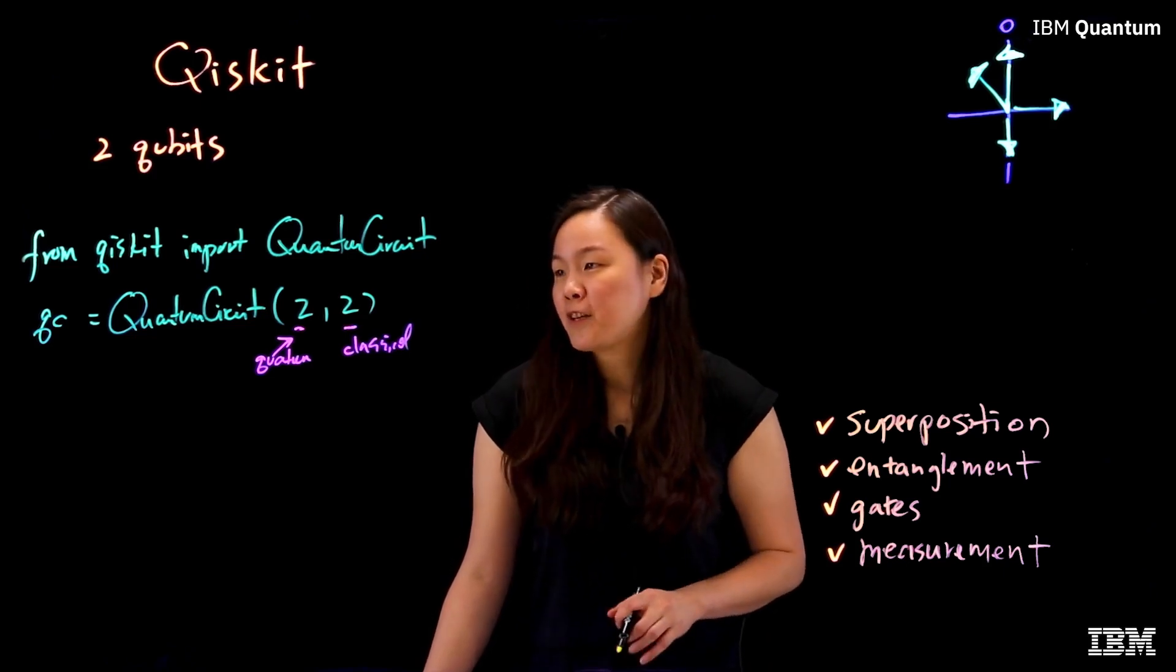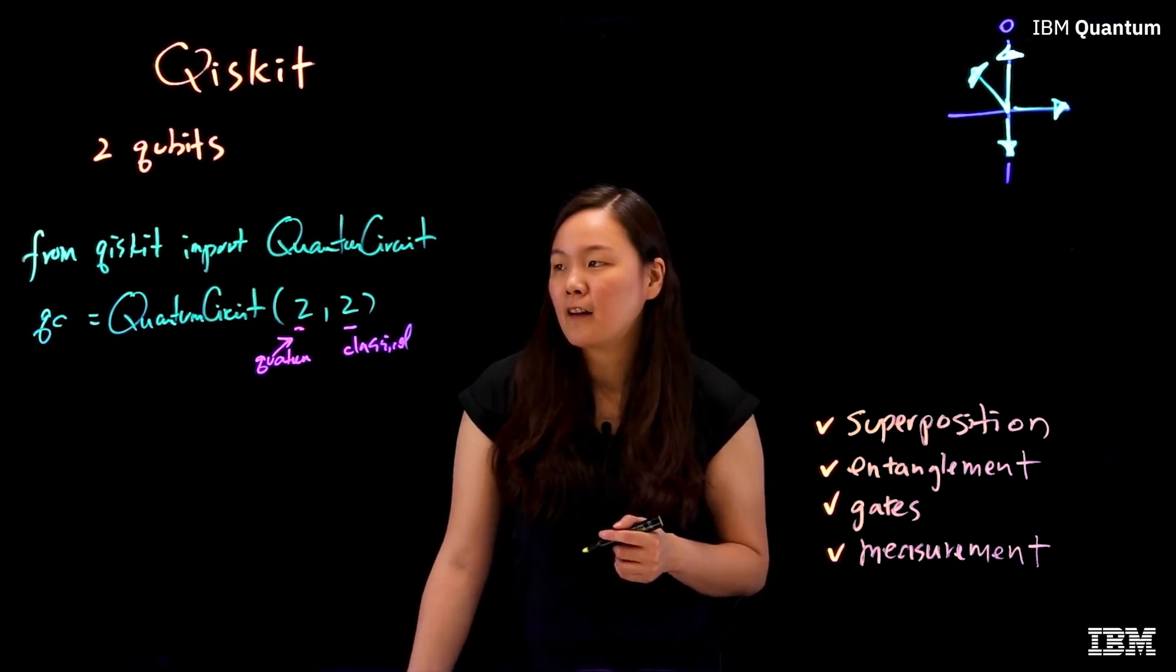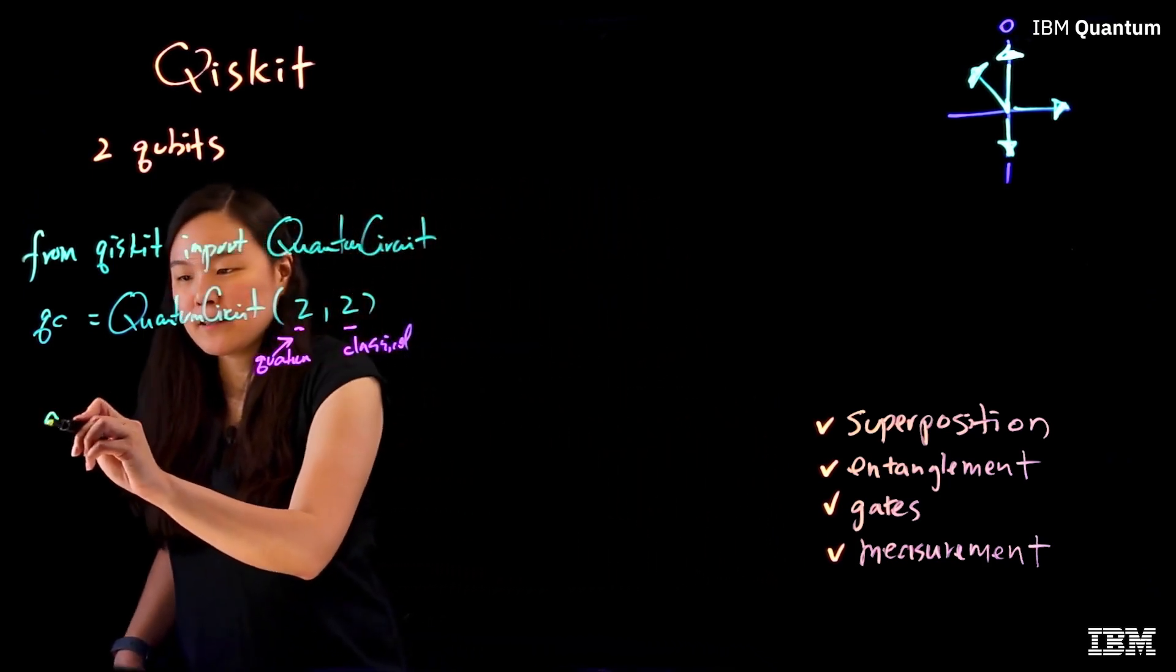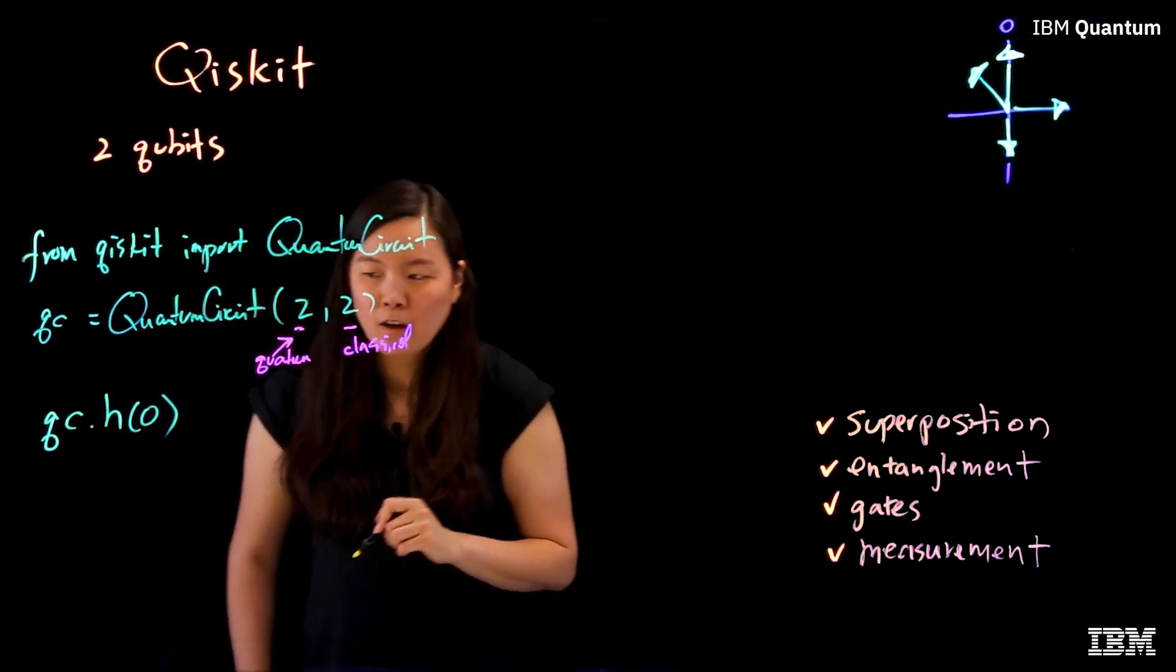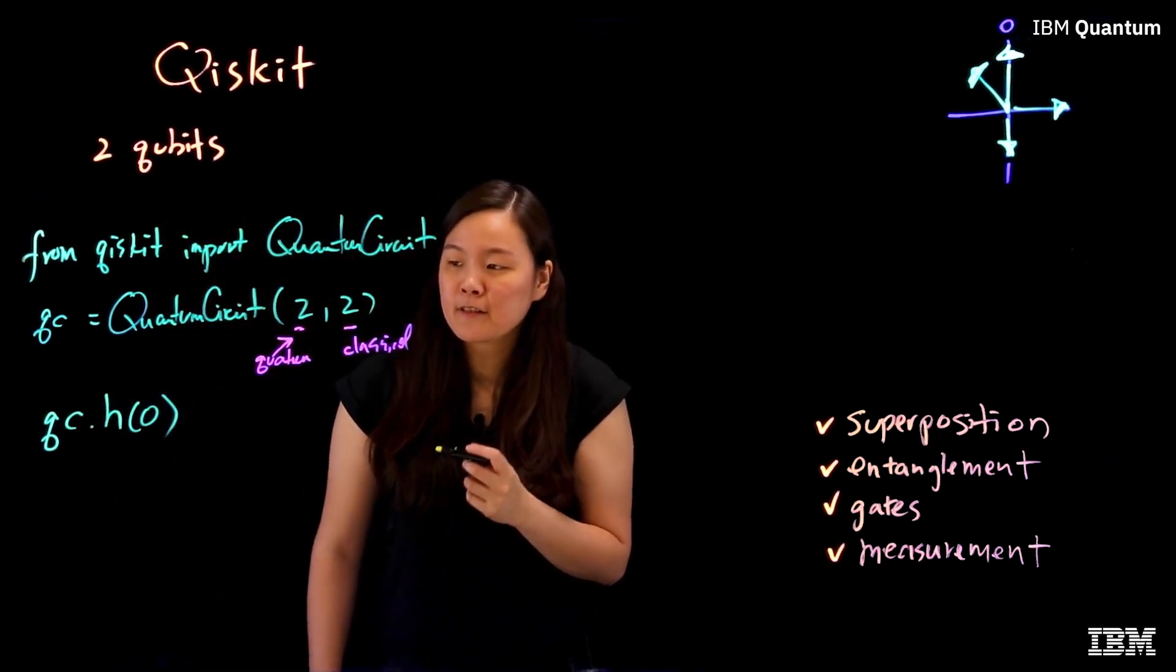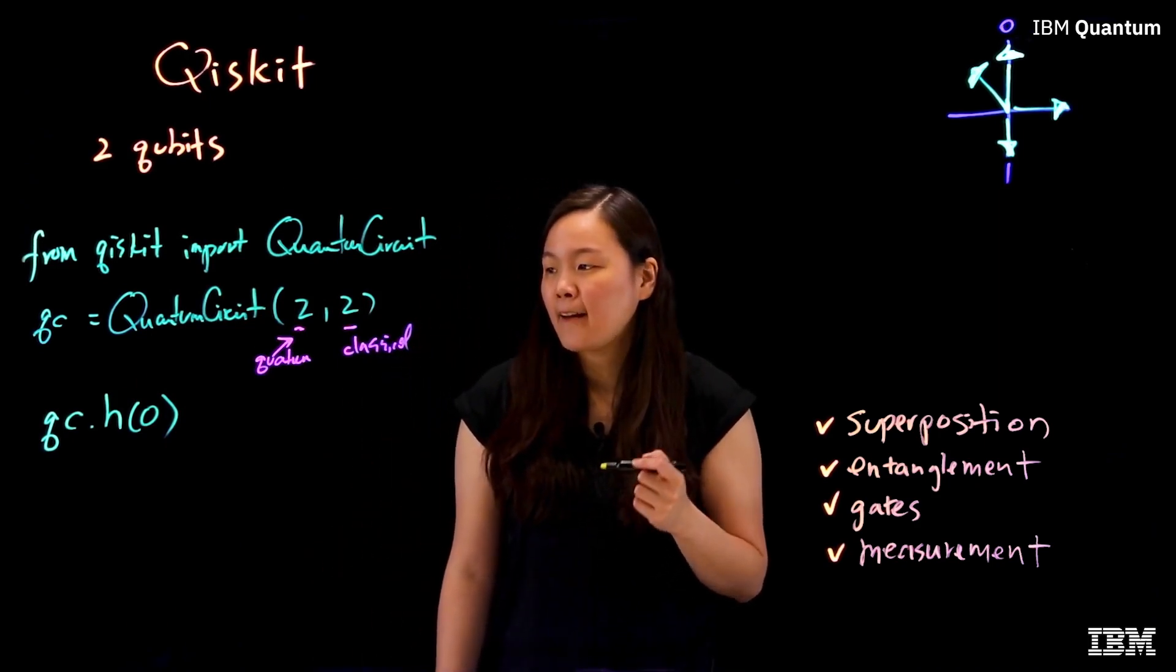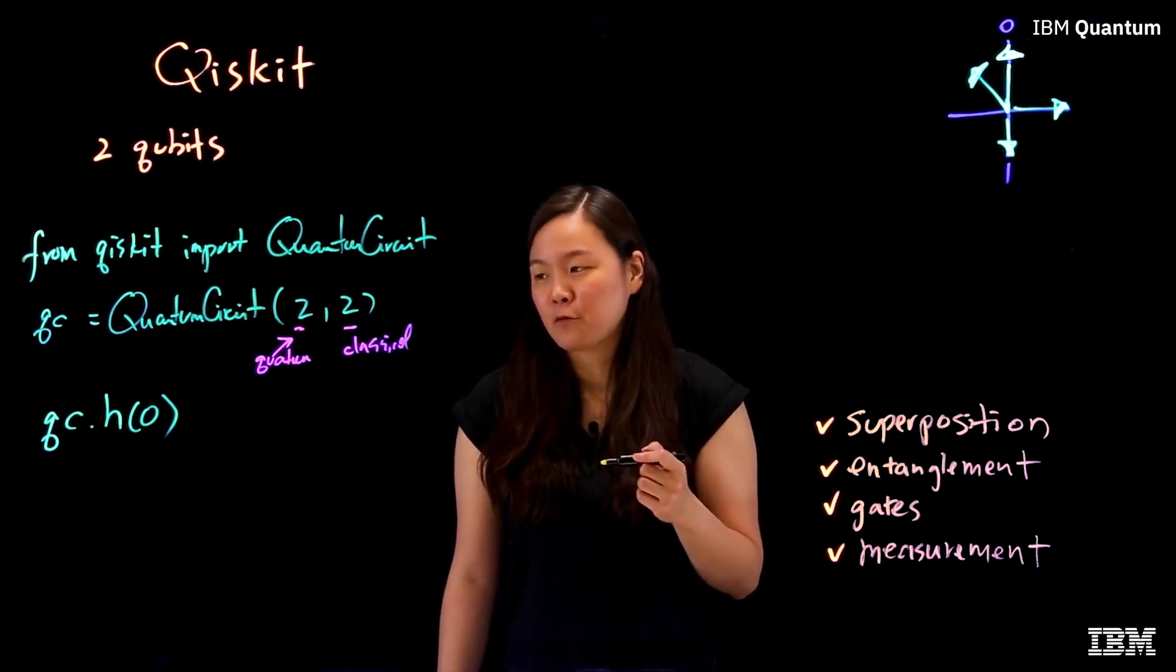So the next thing we want to do is apply some gates. And in this program, we're going to apply two gates. The first one is the Hadamard gate on qubit zero. The Hadamard gate puts the qubits into a superposition between zero and one. That means it now has an equal chance of being measured as zero or a one.